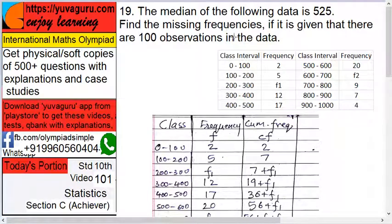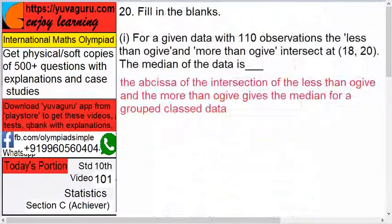Next is fill in the blanks. For a given data with 110 observations, the less than ogive and more than ogive intersect at (18, 20). Then the median of the data is...